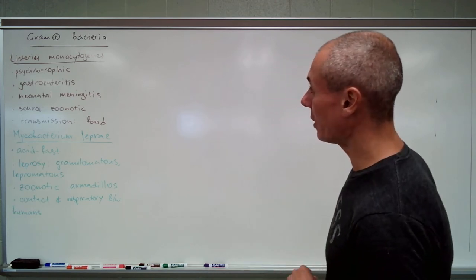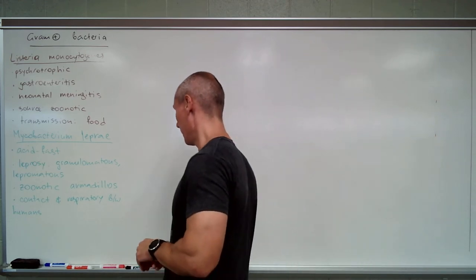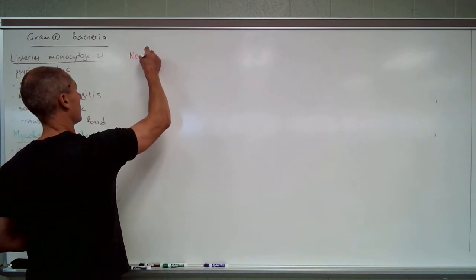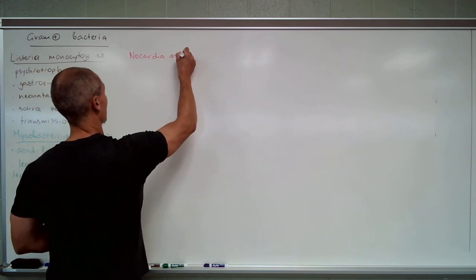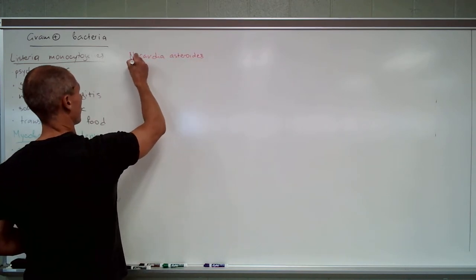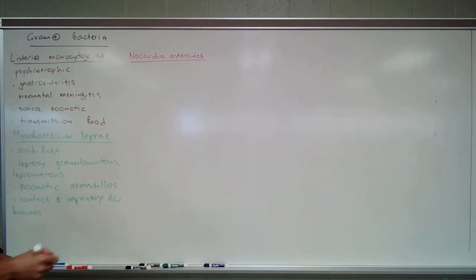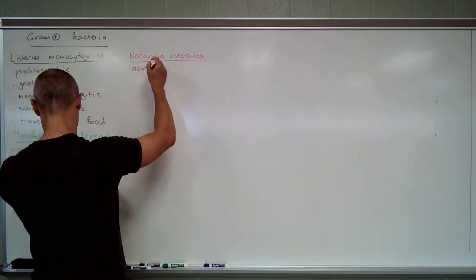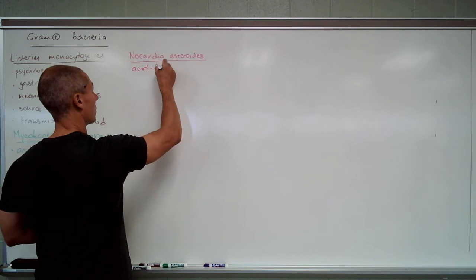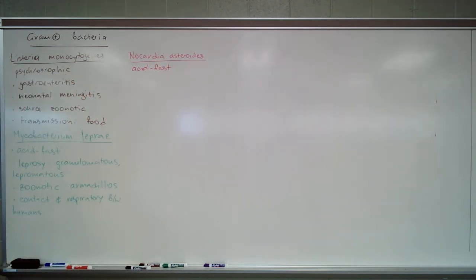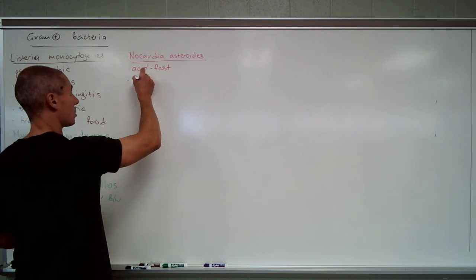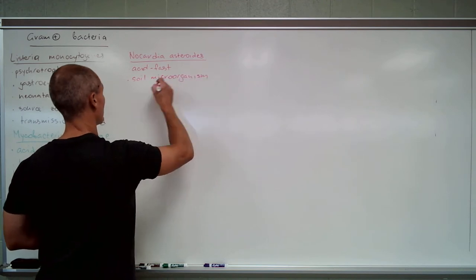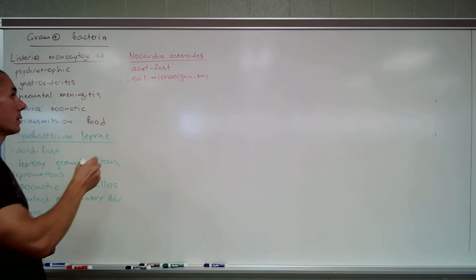On the same note of acid-fast, there is another weakly acid-fast bacteria, Nocardia asteroides. It also has a small layer of mycolic acid. It's basically a soil microorganism but is transmitted to humans mostly in nosocomial settings and is an opportunistic pathogen.